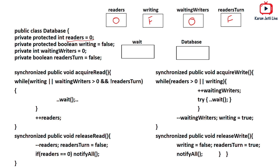Now suppose there is one reader R1 who wants to do a read operation on the database. When R1 comes, it calls acquire_read. It checks: while writing is true — writing is false — or waiting_writers is greater than zero — also false — and not of readers_turn — readers_turn is false so not of it is true. False and true makes the whole condition false, so R1 skips the wait.